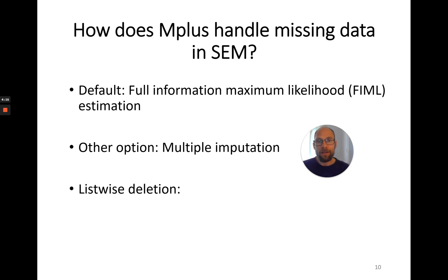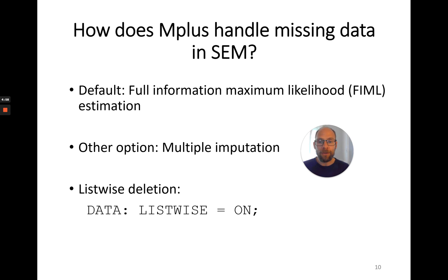Furthermore, in Mplus you also have the option to use listwise deletion, which is not typically recommended. There are very rare instances where you should do this. Typically we should not use listwise deletion because it makes the more restrictive assumption of missing completely at random, which is stricter than the missing at random assumption implied by FIML and multiple imputation. Listwise deletion causes you to lose data, your sample size shrinks, you lose power, and you potentially introduce bias when data are not missing completely at random. You can invoke it by specifying the command LISTWISE=ON in the DATA command in Mplus, and it will only use complete cases.